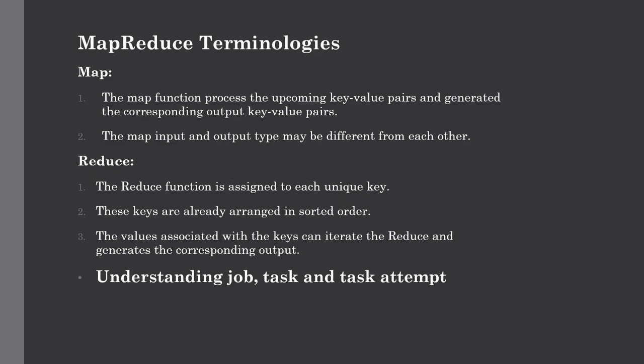Now we need to understand some basic MapReduce terminologies: what is Map, what is Reduce, and how they work. We will also see what is a Job, what is a Task, and what is a Task Attempt. A MapReduce job or a full program is nothing but execution of mapper and reducer functions across your dataset — the execution of two processing layers, mapper and reducer. The MapReduce job is the work that the client wants to be performed.